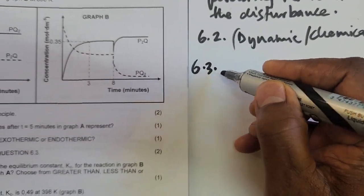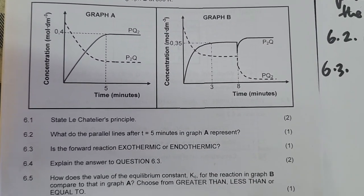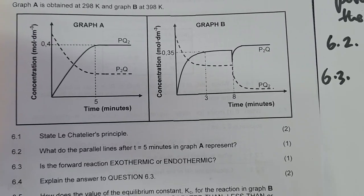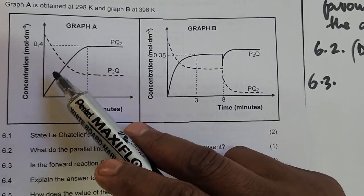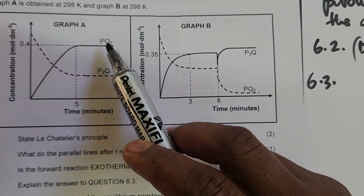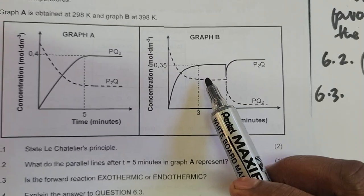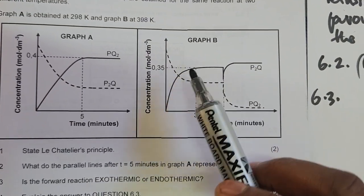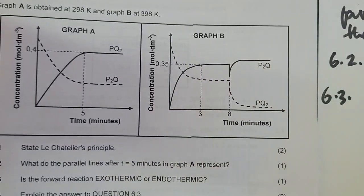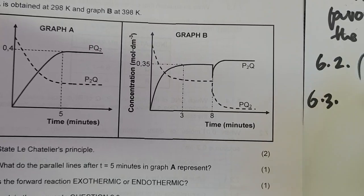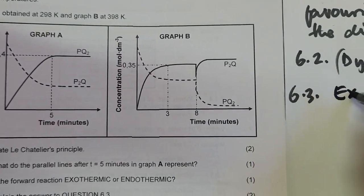6.3: Is the forward direction exothermic or endothermic? Looking at the graphs, PQ₂ has a concentration of 0.4 in graph A, but when we increase the temperature in graph B, PQ₂ is now lower than 0.4 — the products are decreasing. If products decrease, reactants increase. P₂Q is now closer to 0.4, so more reactants are produced. This means the reverse reaction is favored, which is endothermic — therefore the forward reaction is exothermic.